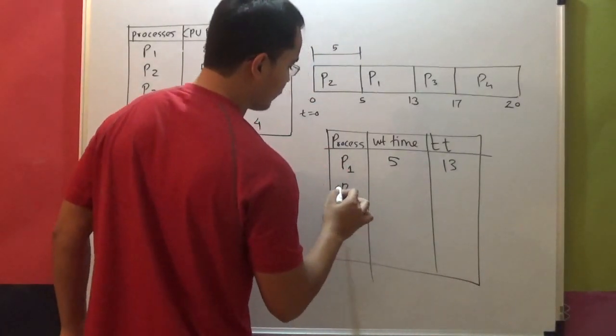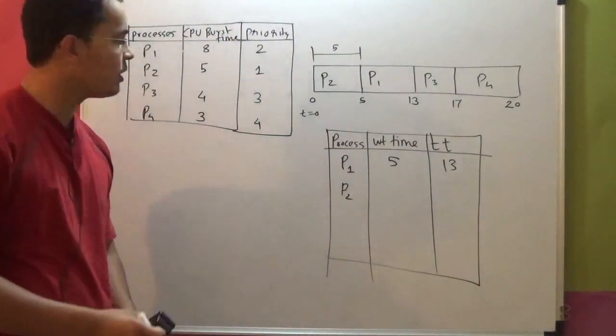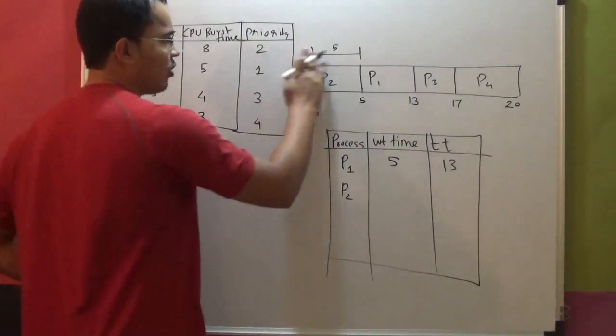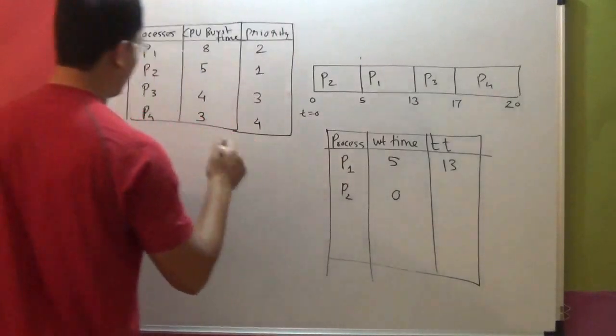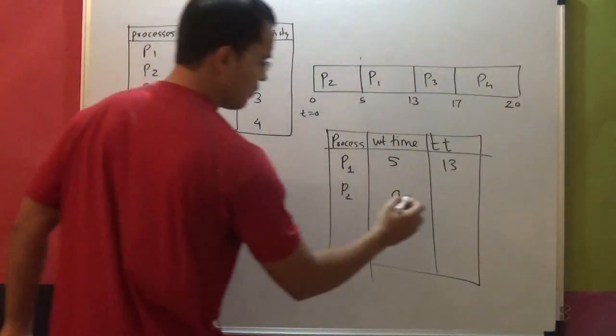P2, waiting time. Waiting time for P2 is 0. P2 executes almost immediately, right? Waiting time for P2 is 0. Turnaround time is 0 plus 5, which is 5.